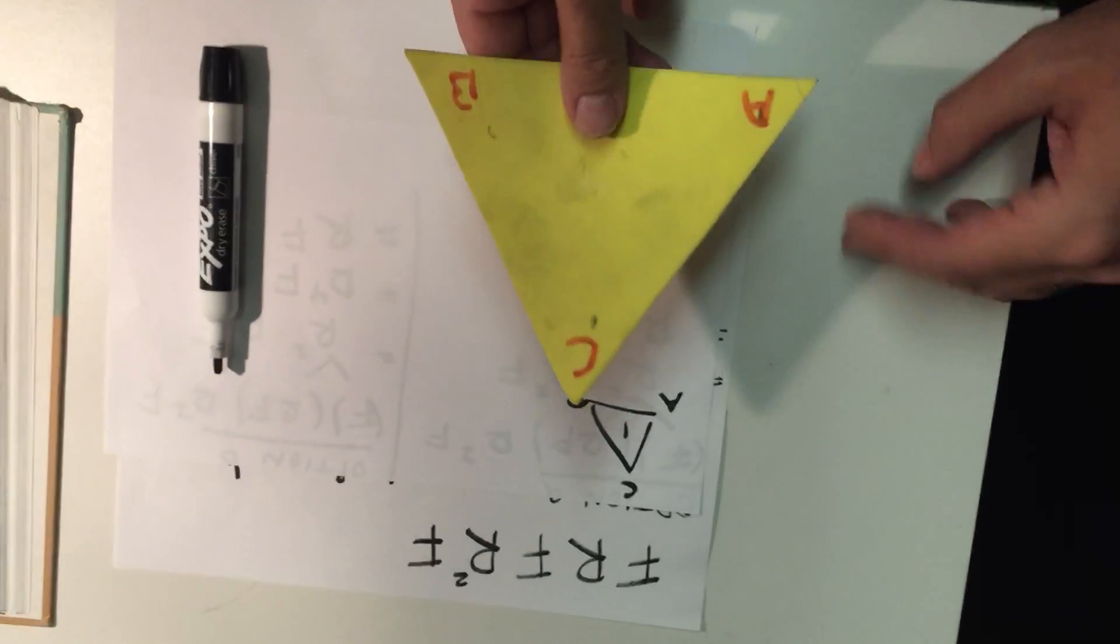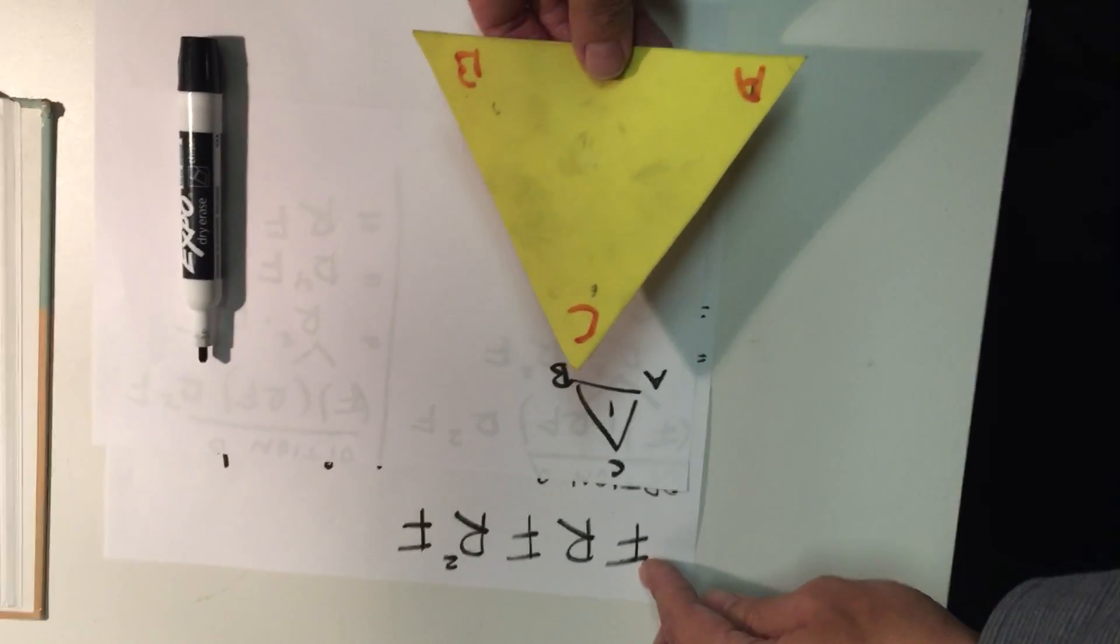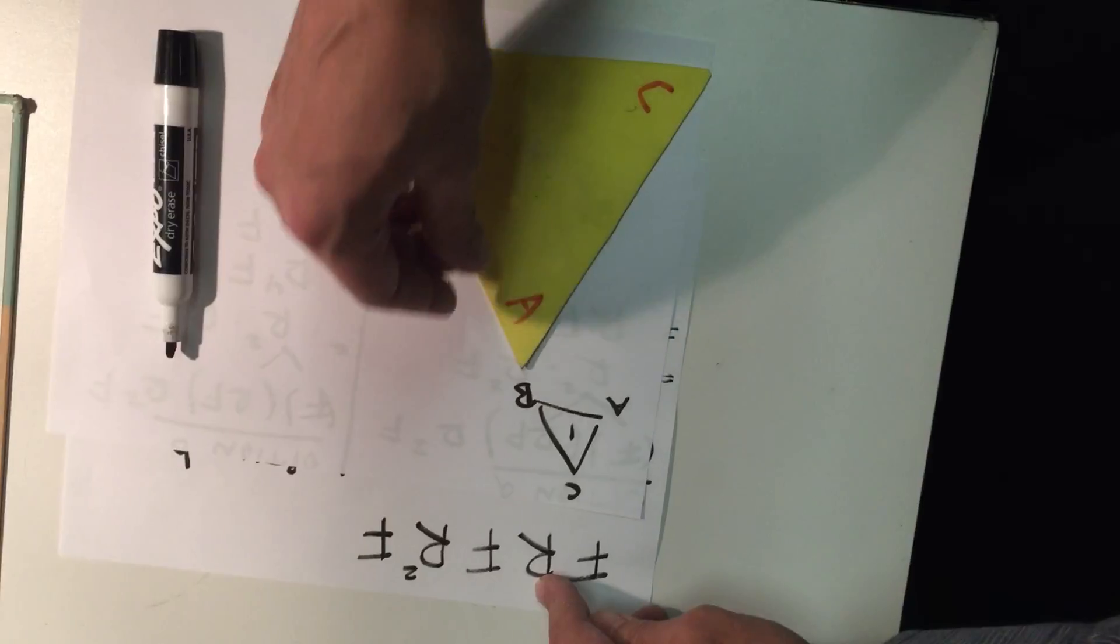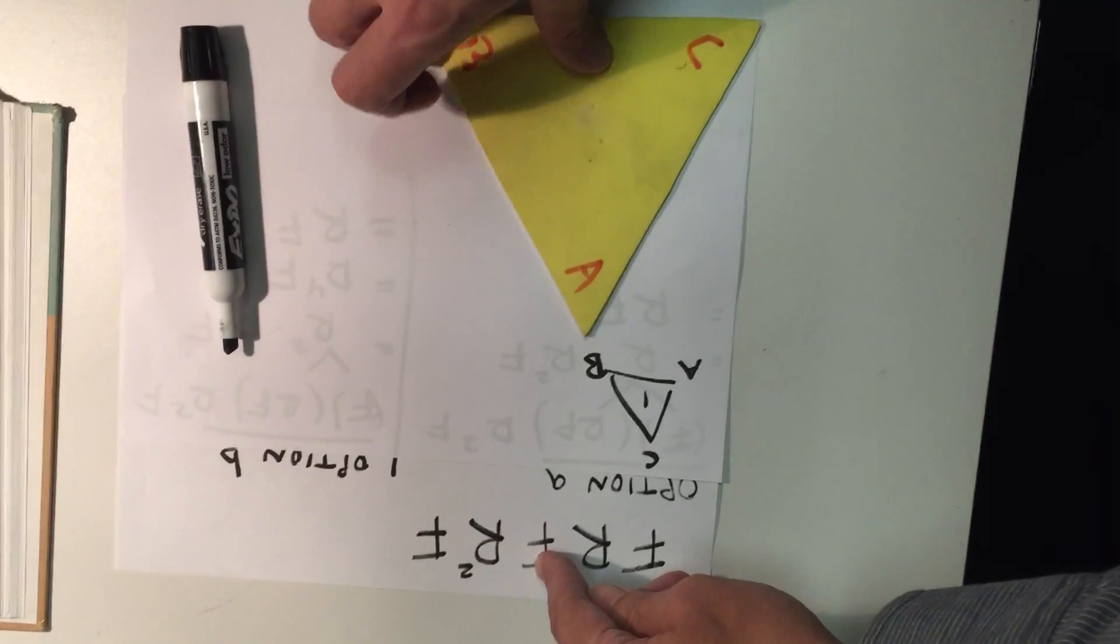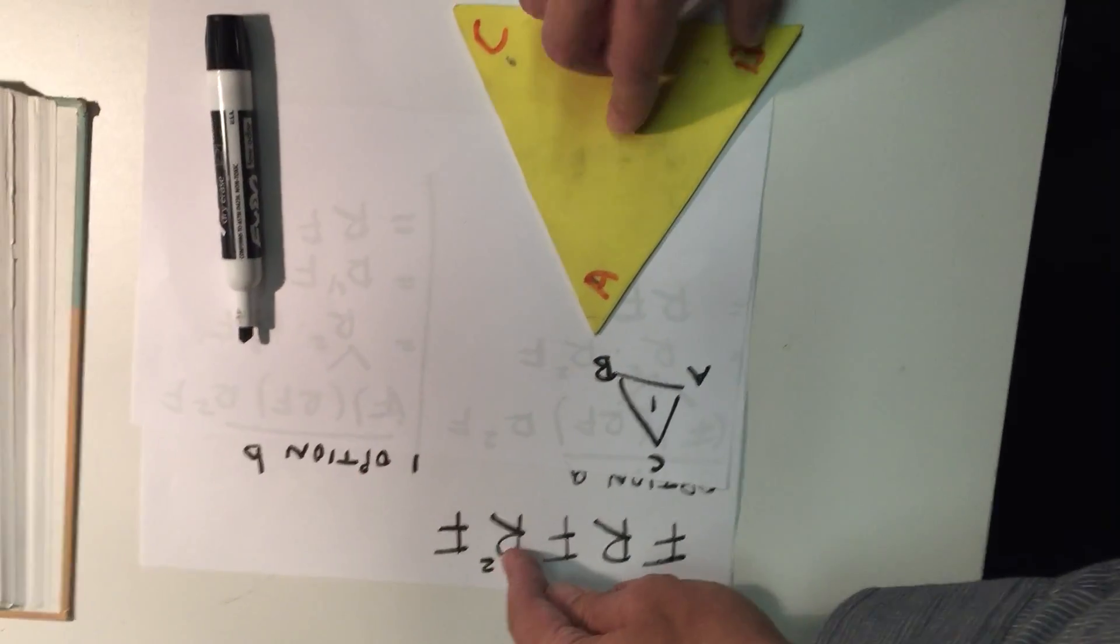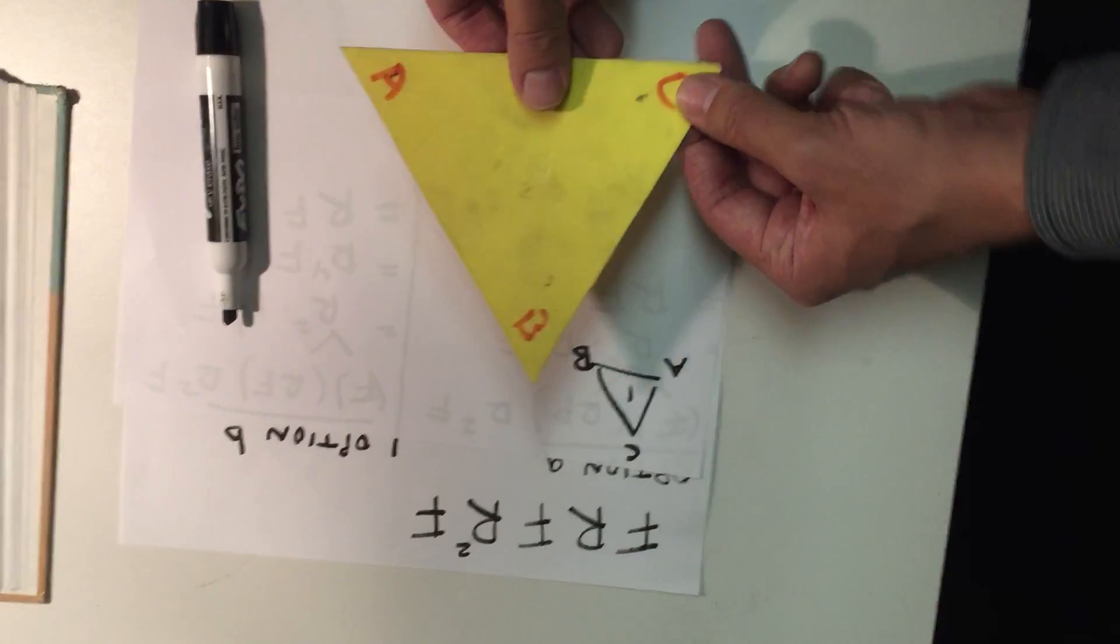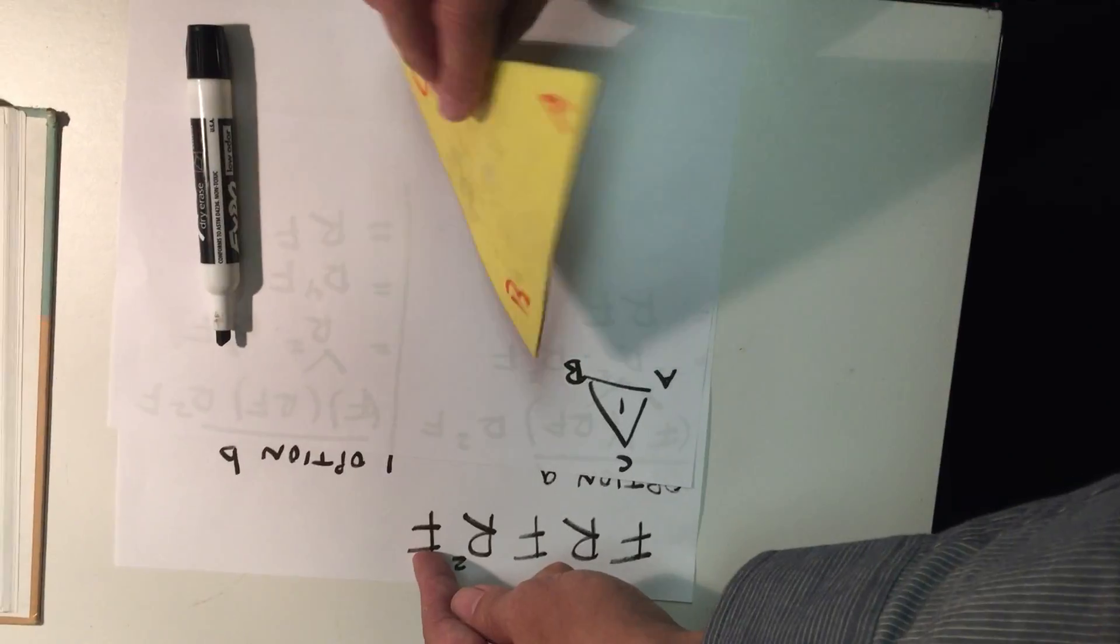So I'm going to go through this sequence. If I start here, I flip the thing, I rotate the thing, I flip it again, I rotate twice - one, two - and then I flip it one more time.